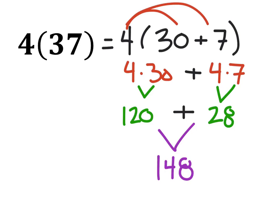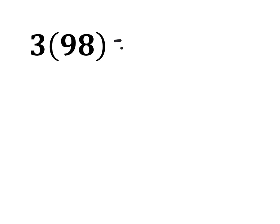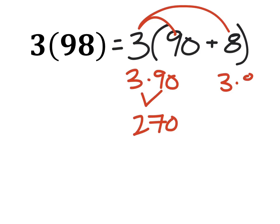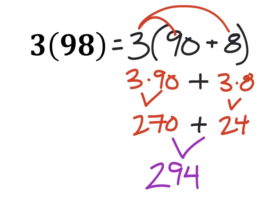For 3 times 98: 3 times 9 is 27, so that's 270. Then 3 times 8 is 24. Thinking just about 70 plus 24 is 94, then with the 200 it becomes 294. Let's verify: rewrite as 3 times the quantity 90 plus 8, distribute — 3 times 90 is 270, 3 times 8 is 24 — and 270 plus 24 is 294. That confirms our answer.